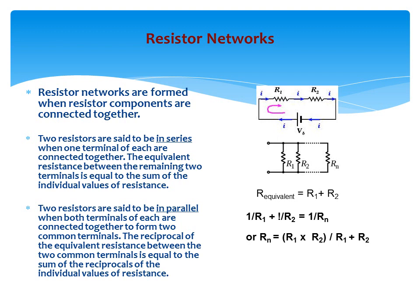Resistor networks are formed when resistor components are connected together. Two resistors are said to be in series when one terminal of each are connected together, as shown in the first diagram. The equivalent resistance between the remaining two terminals is equal to the sum of the individual values of resistance. Two resistors are said to be in parallel when both terminals of each are connected together to form two common terminals. The reciprocal of the equivalent resistance between the two common terminals is equal to the sum of the reciprocals of the individual values of resistance. This is a more complex operation, but one that you should be able to handle.